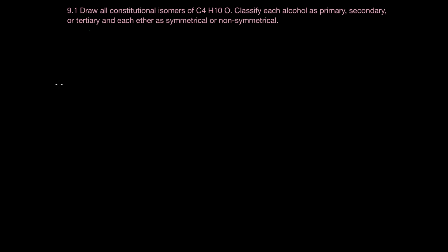Problem 9.1 starts us off with a molecular formula, and we're asked to draw some constitutional isomers of alcohols and ethers, as many things as we can think of, and classify the alcohols and ethers according to their structure.